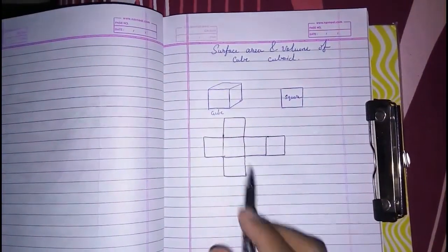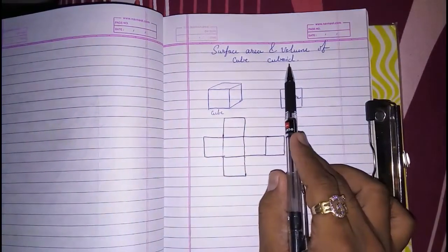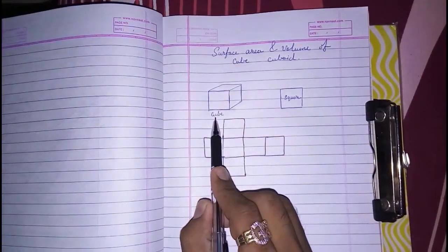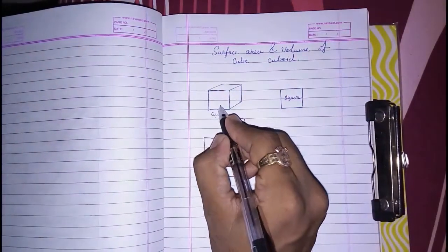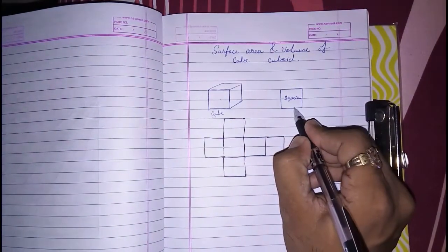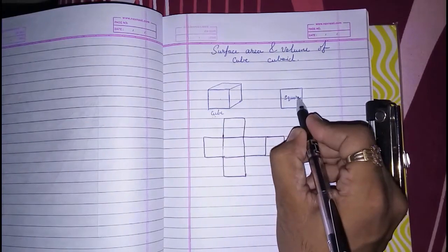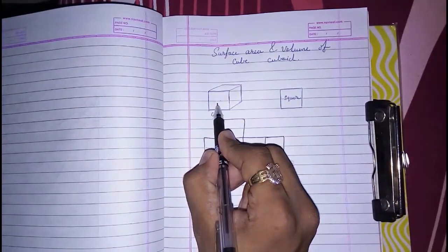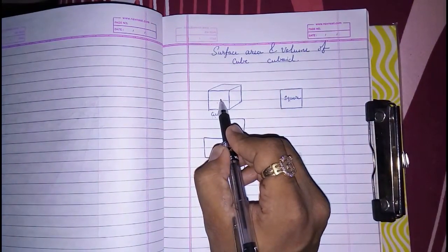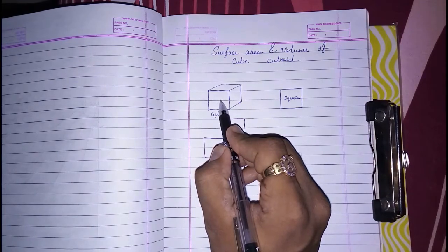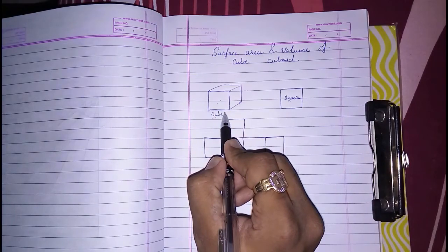Hello friends, today we are going to study about surface area and volume of cube and cuboid. This is a cube — a three-dimensional figure. A square is two-dimensional. Combining two-dimensional figures gives us three-dimensional figures. This cube is made up of six squares on all four sides, the upper side, and the lower side.